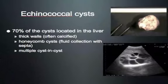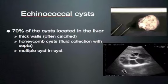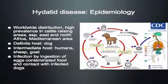Echinococcal cysts are parasitic cysts. The majority are located in the liver. They are thicker-walled and may have small amounts of calcification in the wall. Some have a honeycomb appearance, which makes differentiation from normal cysts easy. You may also see a cyst-in-cyst phenomenon. Let's look at the epidemiology of hydatid disease first.